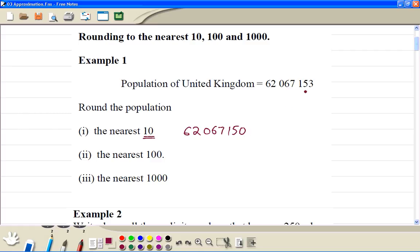When we do to the nearest 100, then we look at the figure of 10s, because this is 5, so we round this figure up. So the answer is 62,067,200.